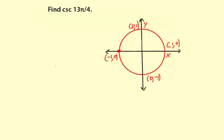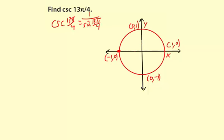Find the cosecant of 13π over 4. Remember, cosecant is the reciprocal of sine. So the cosecant of 13π over 4 is the same as 1 over the sine of 13π over 4. So we can find the sine of 13π over 4, and then find the reciprocal of that to get the cosecant.